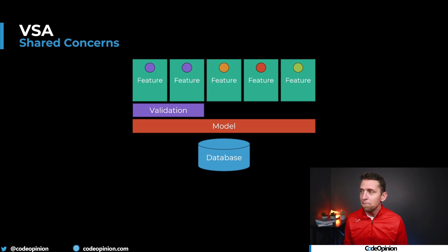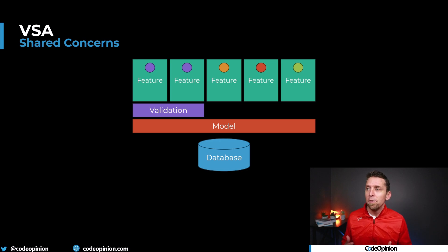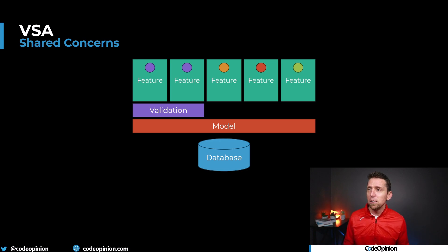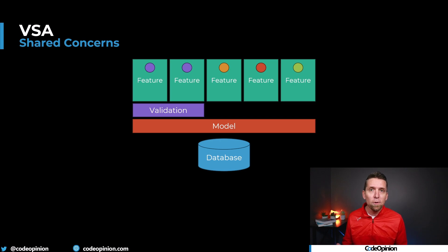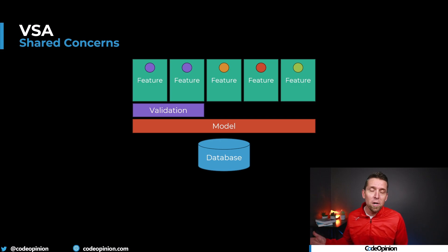A different way of looking at it: let's say two features are using one particular way to validate, and then the other three features have something completely different. That's kind of the benefit of having things organized by feature, by verticals — you can decide what that implementation looks like. Maybe something is shared between a couple of them, maybe it's not.